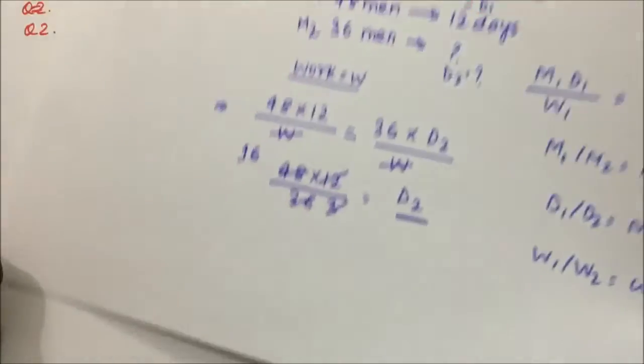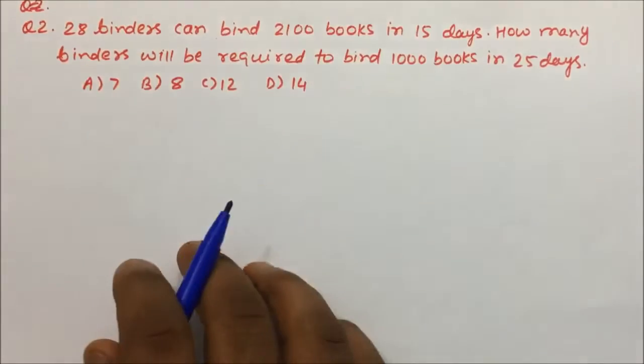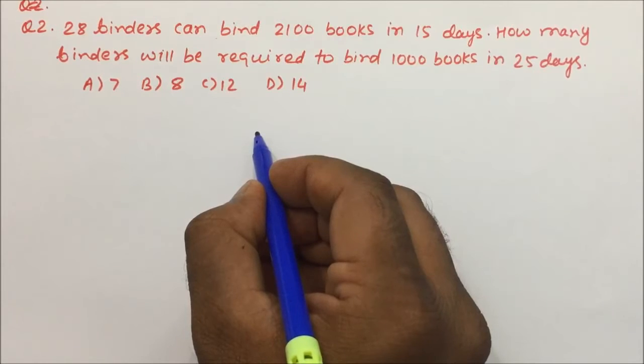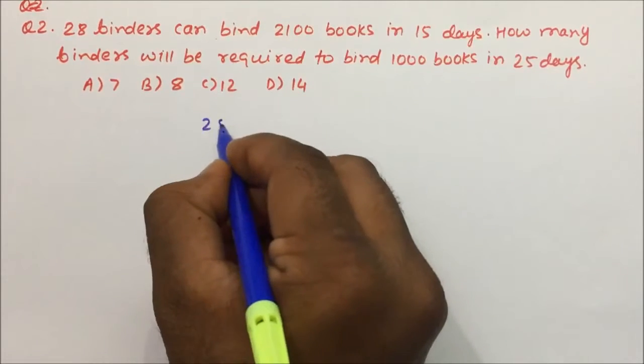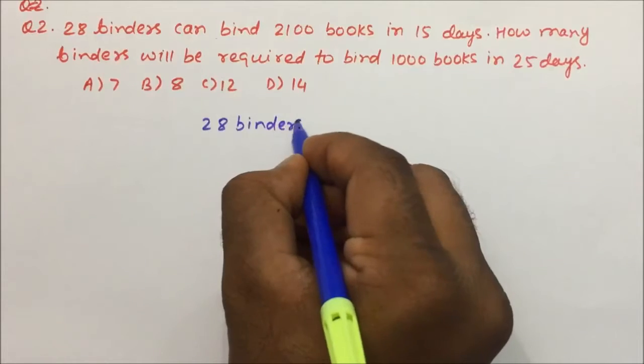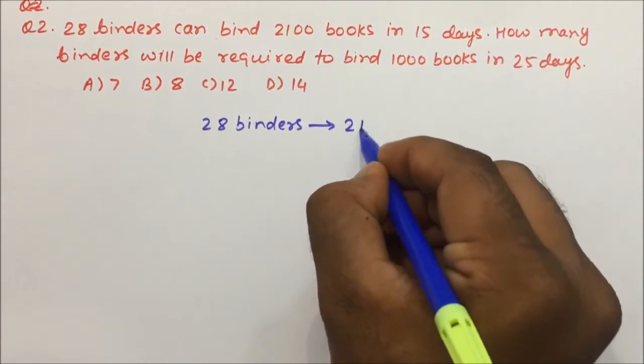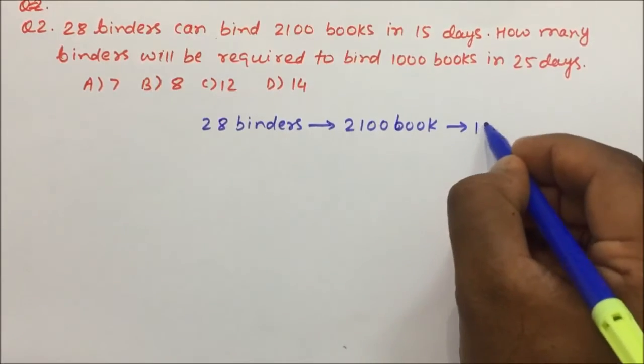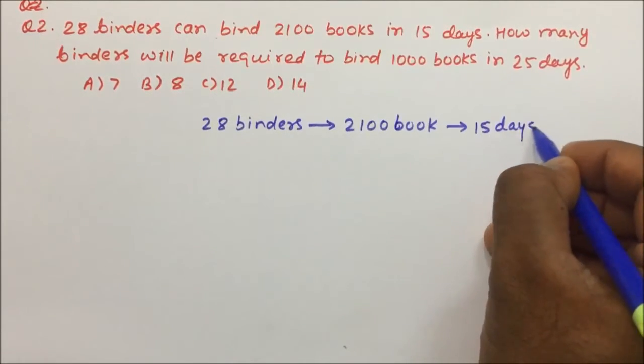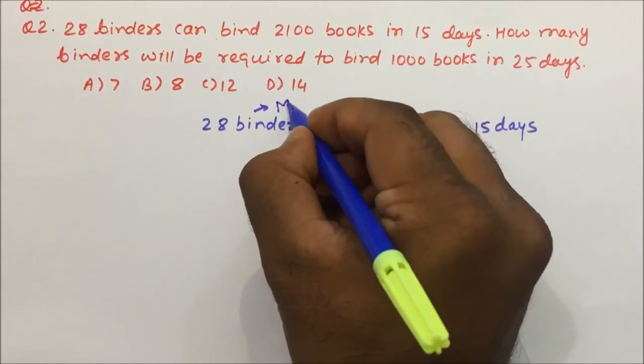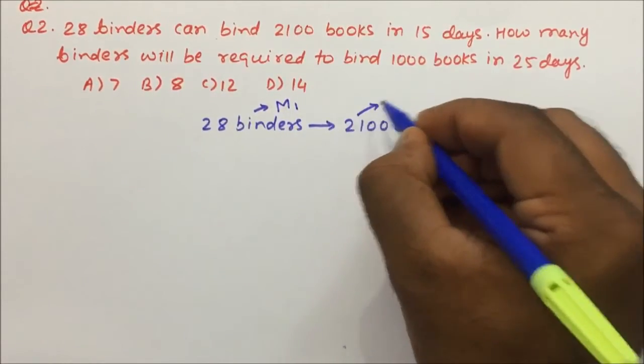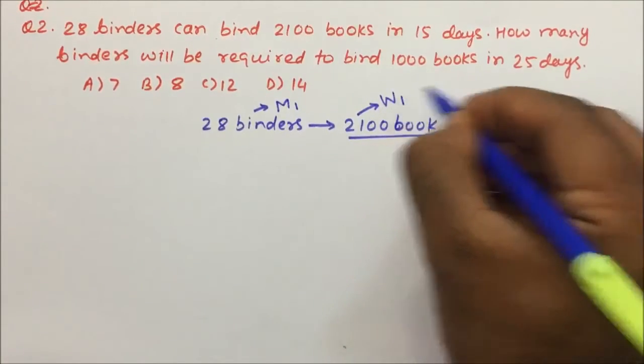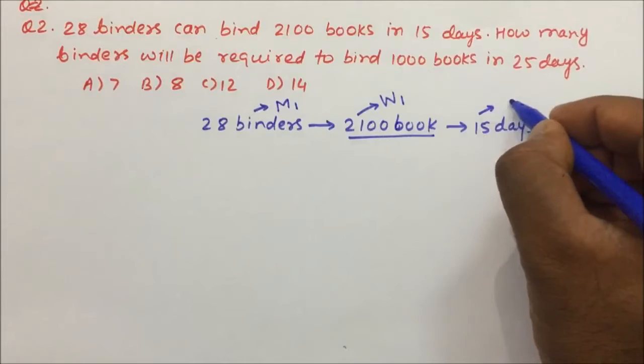Now question number 2: 28 binders can bind 2100 books in 15 days. So 28 binders binding 2100 books in 15 days means 28 binders is M1, 2100 books is work, and 15 days is D1.